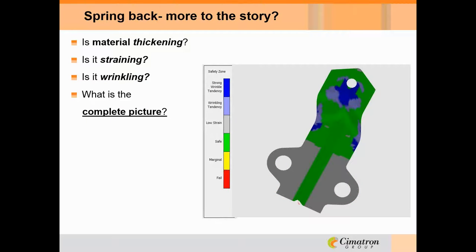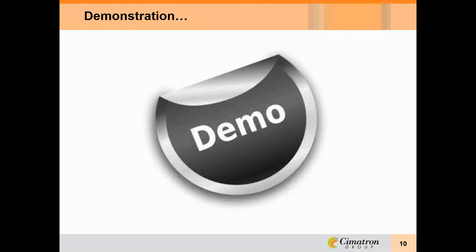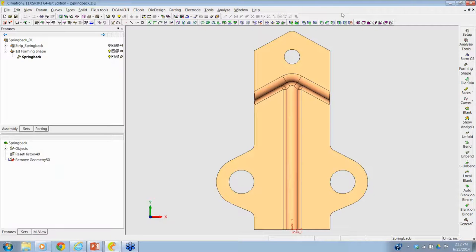But there's more to the story. What if the material is thickening in a certain area? If that's the case, I have to worry about wrinkling and make sure my die is ready to deal with a thickening area. What if it's going to tear? All this is going on, and analysis is going to help us see every aspect of what's taking place with this part. Let me show you a little more detail on the springback functionality.